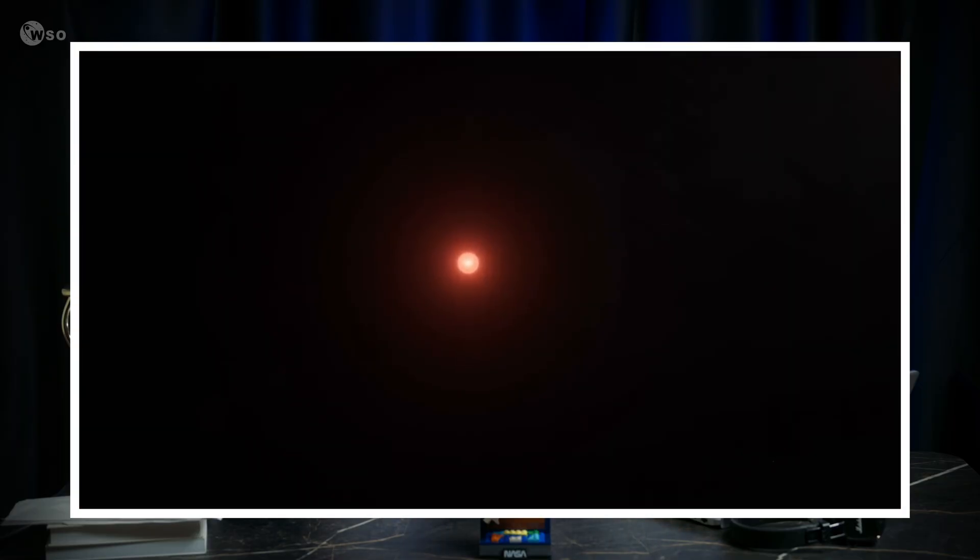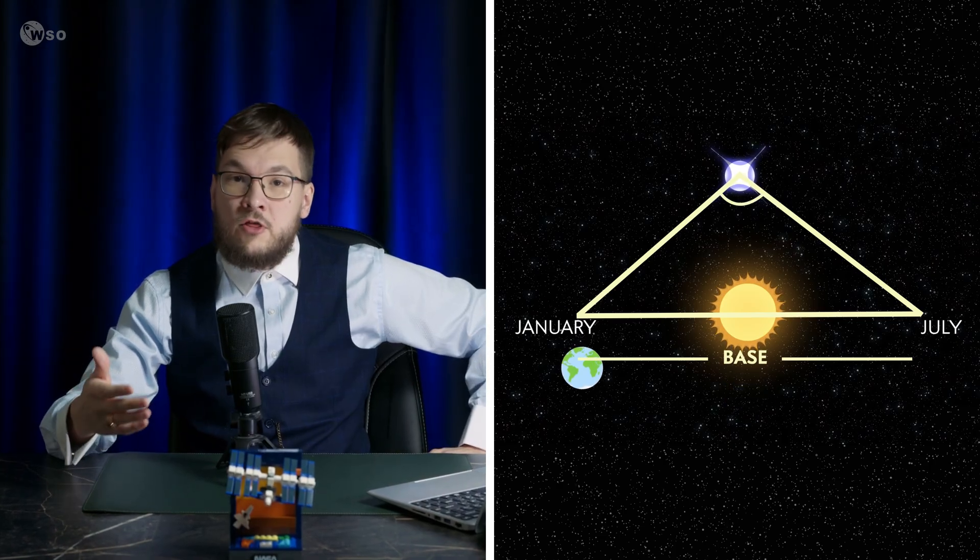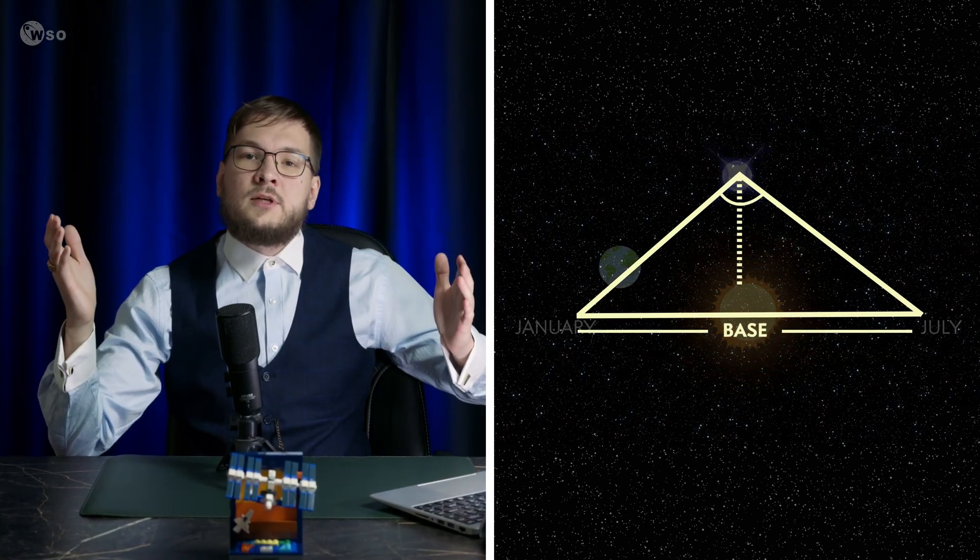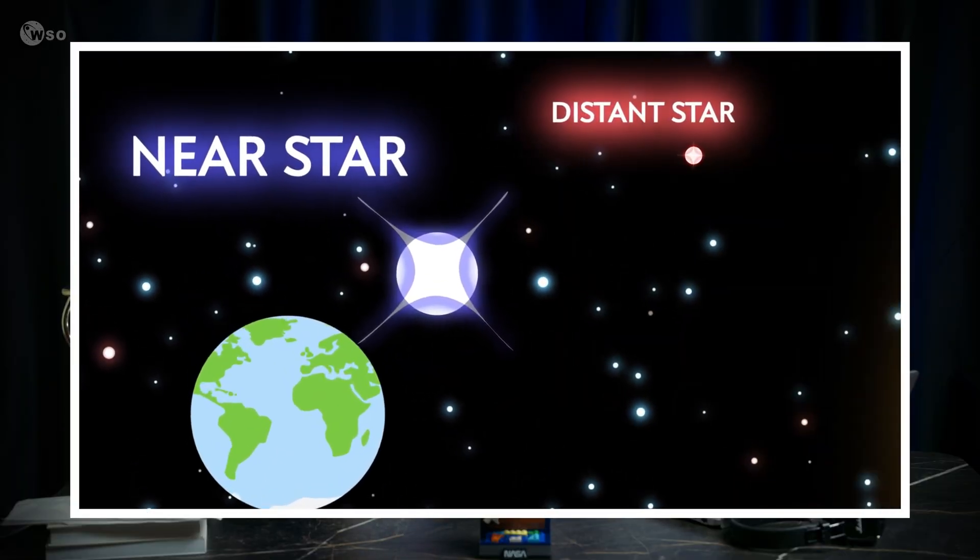So we face a classic astrophysics situation. Either the star breaks stellar theory, or the distance estimate is wrong. In astronomy, when a result contradicts basic physics, the problem is almost always the distance.